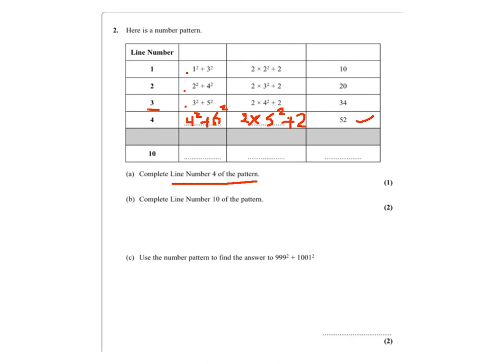So coming to pattern number 10 we will have 10 squared plus 12 squared and this is again when you look at 4, 1 extra. So 10 will be 1 extra so it will be 2 times 11 squared plus 2 and this will give us 244.